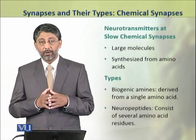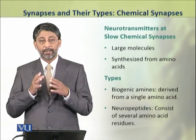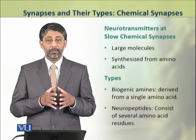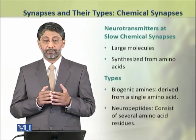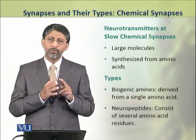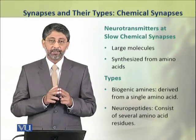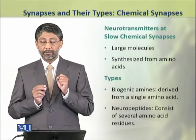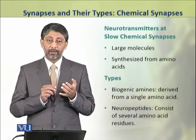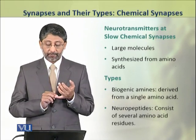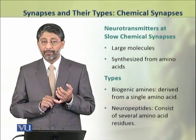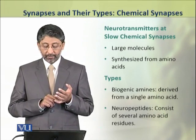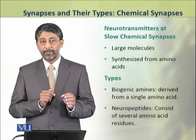The neurotransmitters involved in slow chemical transmission are generally large molecules. They are synthesized from amino acids. There are two major groups: biogenic amines, which are derived from a single amino acid, and neuropeptides, which consist of several amino acid residues.